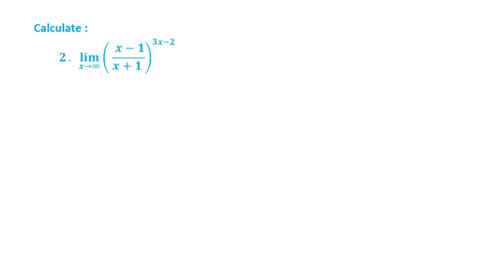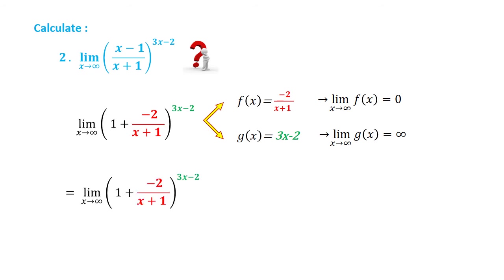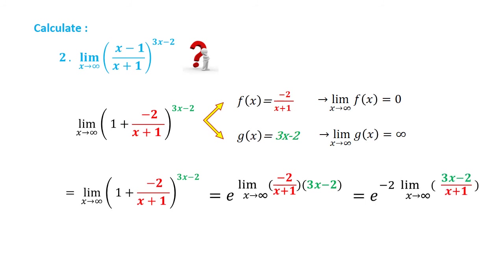Number 2: Two limits such that f(x) equals minus 2x plus 1, and g(x) equals 3x minus 2. The result is e ranked minus 6.